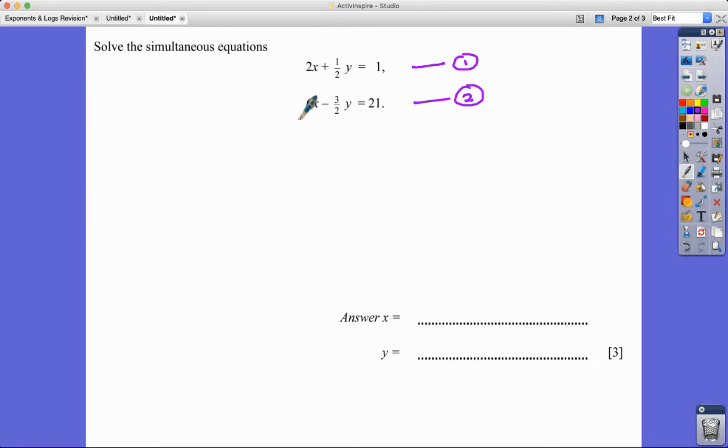But my first instinct is to look at the 2X and the 6X. I'm probably going to times equation one by three so that I get another 6X.